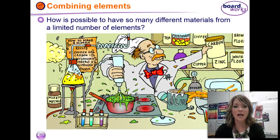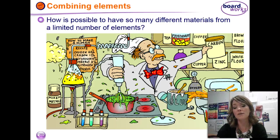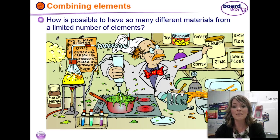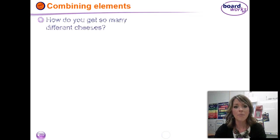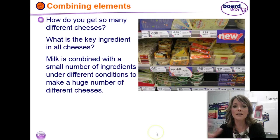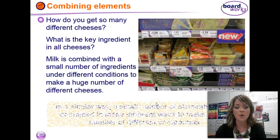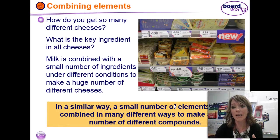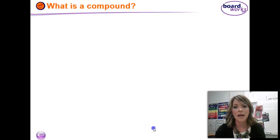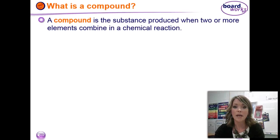You can also get lots of different kinds of materials by combining the elements. The way that we have millions of different substances from just about a hundred naturally occurring elements is because they combine in almost limitless different ways. Just like combining cheeses — you get all these different kinds of cheeses because they have a small number of ingredients and the milk are combined under different conditions to make all this variety. The same thing happens with elements: those hundred or so elements combine in various ways and conditions to make all of these different compounds. A compound is a substance that is made when you have two or more elements that combine in a chemical reaction.